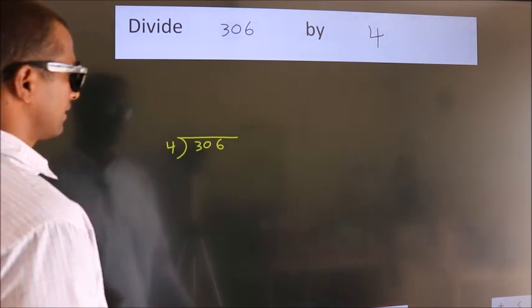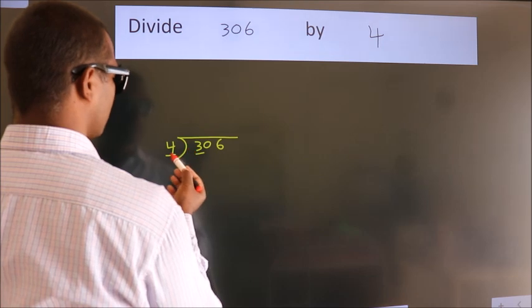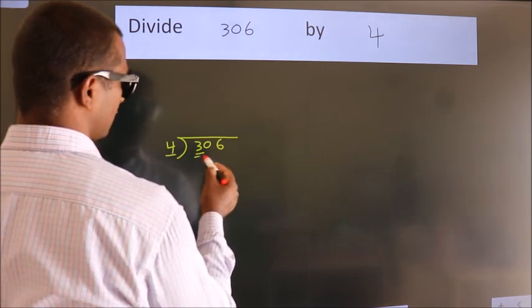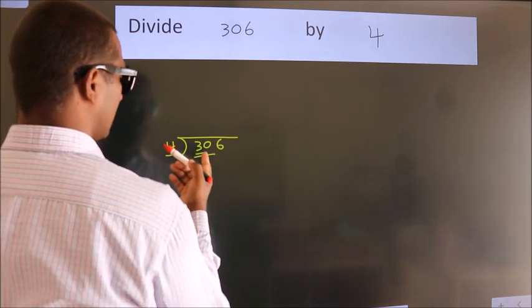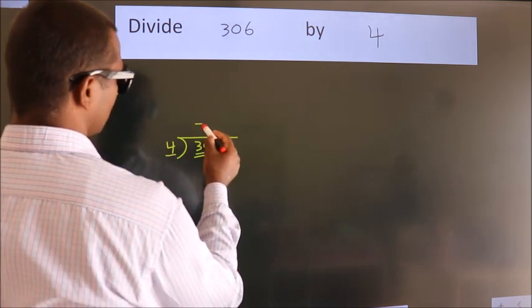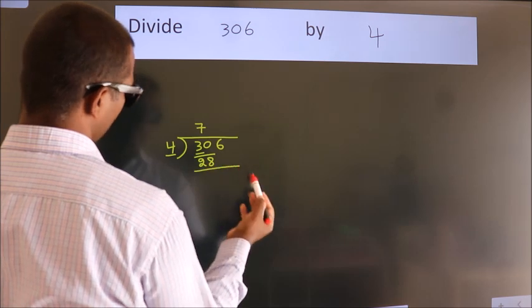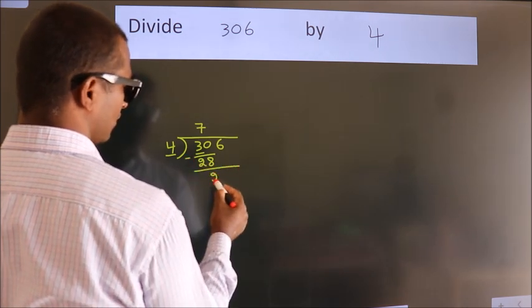Next, here we have 3, here 4. 3 smaller than 4. So we should take two numbers: 30. A number close to 30 in 4 table is 4×7=28. Now we should subtract. We get 2.